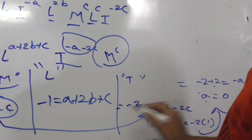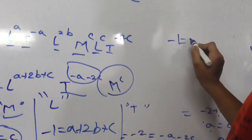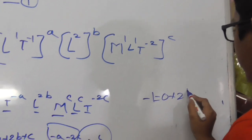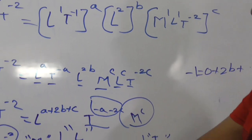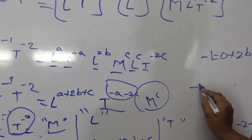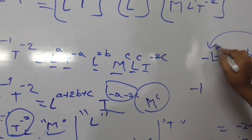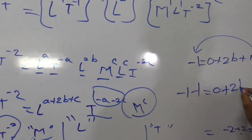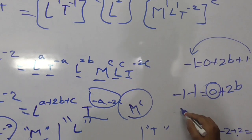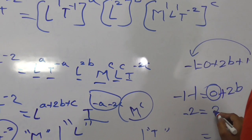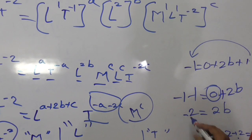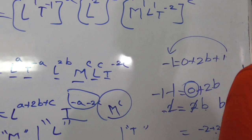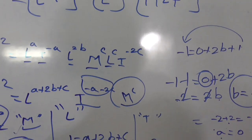Now we have both A and C values. For L: minus 1 equals A plus 2B plus C. Substituting A equals 0 and C equals 1: minus 1 equals 0 plus 2B plus 1. Taking plus 1 to the other side: minus 2 equals 2B, so B equals minus 1.